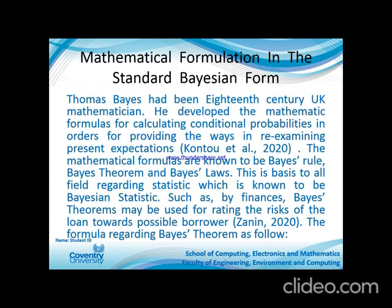Bayes' theorem is still the base of statistics and is used even for calculating borrower risk in banks. It handles probability — for example, if it rains every year in one location, the probability is high that it will rain this year too. Similarly, in mapping, shapes are made probabilistic: if something has a certain shape, the algorithm considers it a circle, triangle, rectangle, or other shape, and the predefined algorithm measures the map of that environment using Bayes' theorem.